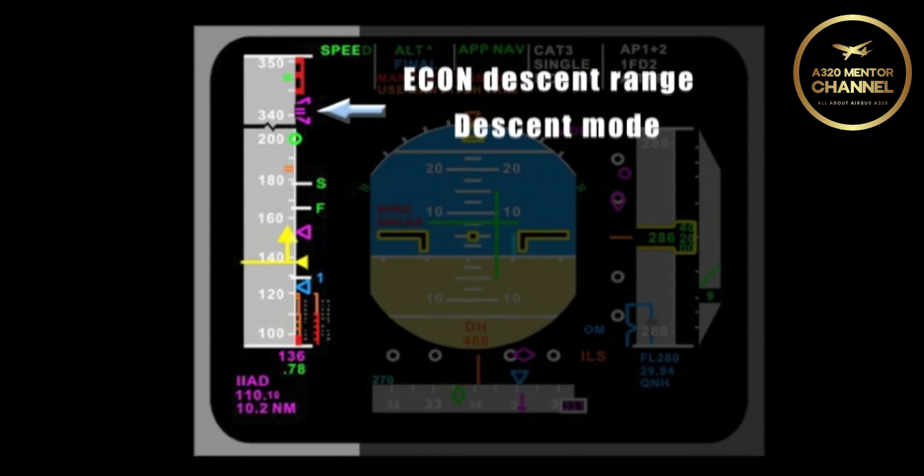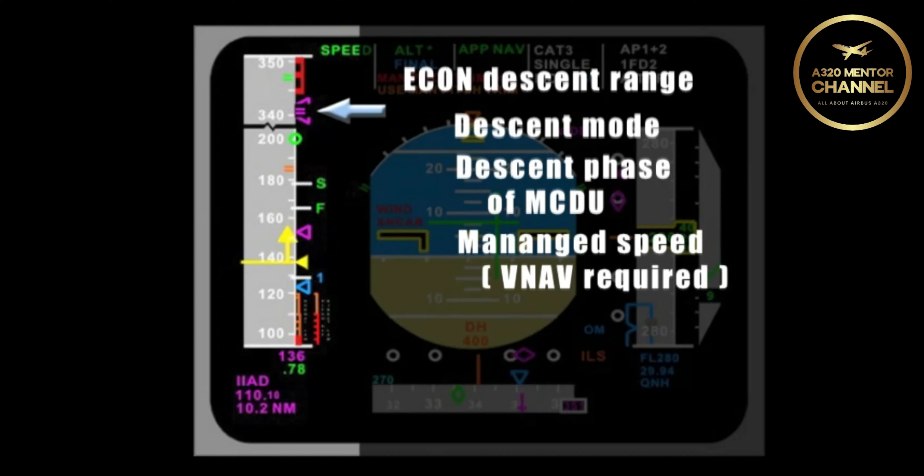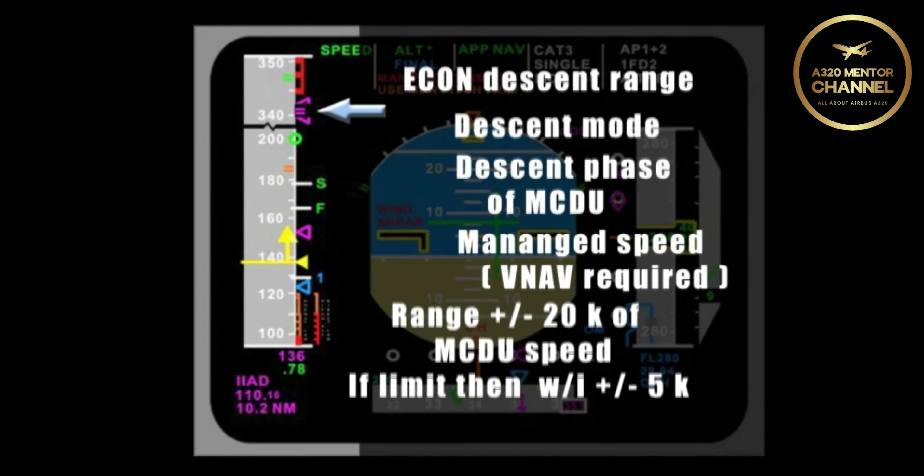Next, the aircraft must be in the descent phase of the MCDU. Finally, as indicated by the magenta color, you must be in managed speed. What is the range of speed between the Econ descent brackets? The range is plus or minus 20 knots from the speed we have programmed in the MCDU. If this is a limitation, such as 250 below 10 or close to VMAX, the speed will be within 5 knots above or below the limitation.